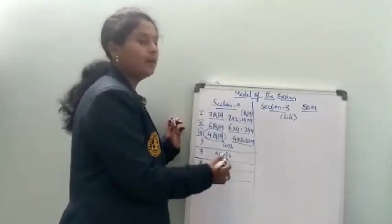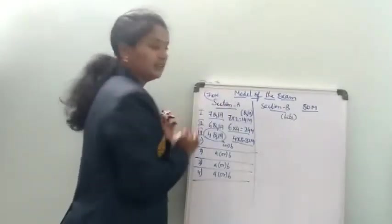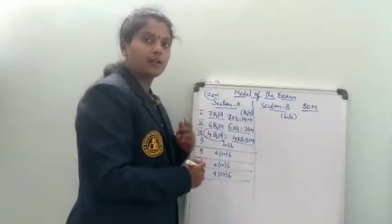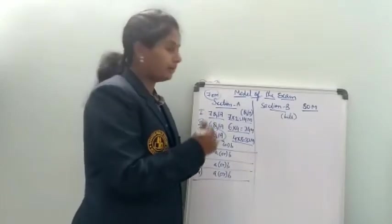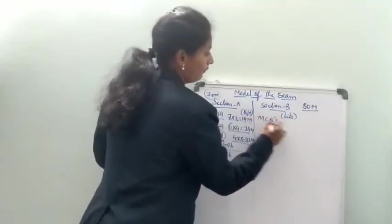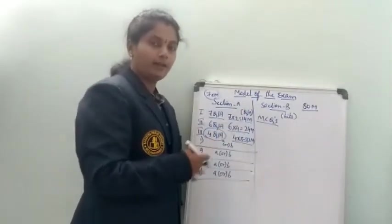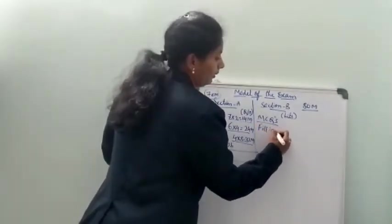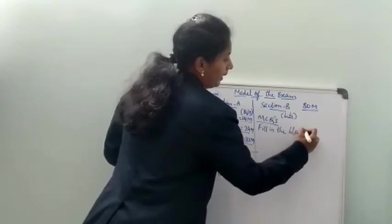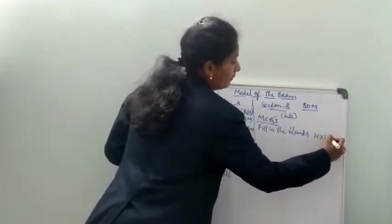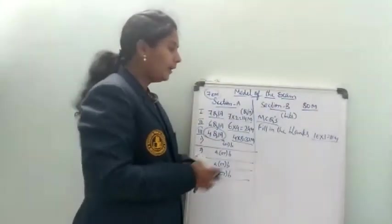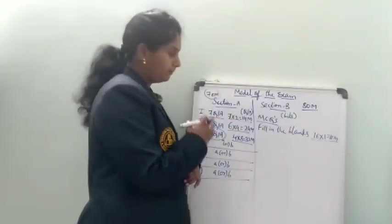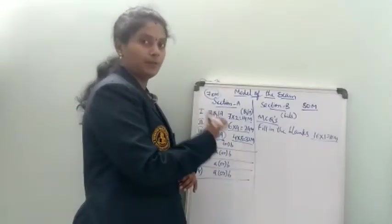The total weightage of marks for the question answers part comes to 70 marks. Coming to Section B, normally in SA1 and SA2 you have multiple choice questions, but in our exam pattern I have converted them into fill in the blanks. I am giving 10 blanks, each carrying 1 mark, totalling 10 marks. This is the complete model of the exam.